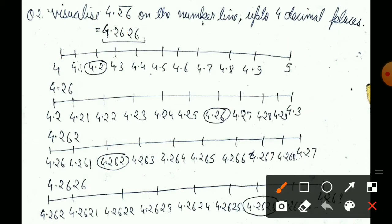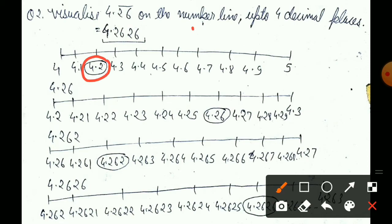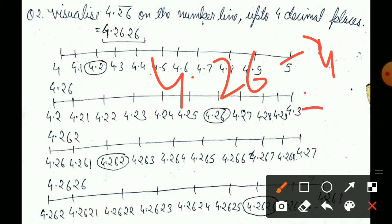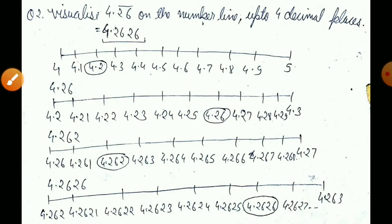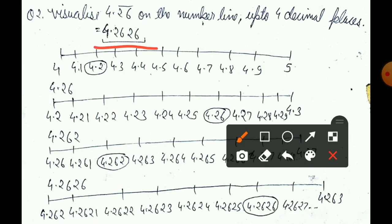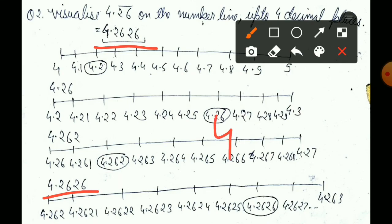4.2 here, 4.3 here. Now you need 4.26, which will be between 4.2 and 4.3. Then 4.26 to second position. You need 4.2626, so the last number you need is between 4.262 and 4.263.